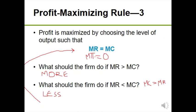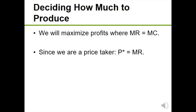To bring it all together, our profit-maximizing rule is: we maximize profit where marginal revenue equals marginal cost. Because our firm is a price taker — we take prices as given and can't influence them with our market behavior — our marginal revenue is just the price. So we maximize profits where price equals marginal cost.